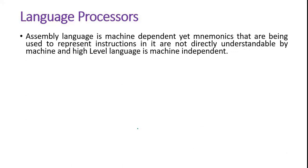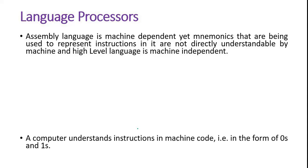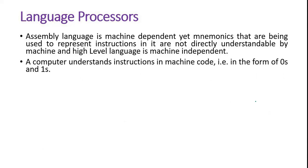For programming, you need to understand a concept called language processor. We already know that machines or computers understand only ones and zeros. Simple tasks we can do manually, but for complicated tasks we need computers. Computers will not work automatically — we have to instruct them. But since computers understand only ones and zeros, we cannot write code directly in ones and zeros. That is very, very difficult and it is impossible.